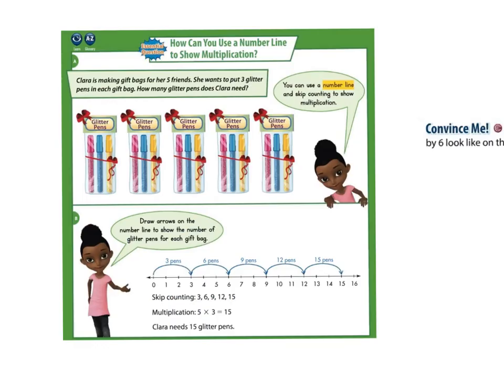How can you use number line to show multiplication? So Clara is making gift bags for her friends. She wants to put three glitter pens in each gift bag. How many glitter pens does Clara need? Take a look at your problem. She is making gift bags for her five friends. And she puts three in each gift bag. We can see that she has five gift bags pictured here. If we use the number line, each gift bag is a jump with three pens.